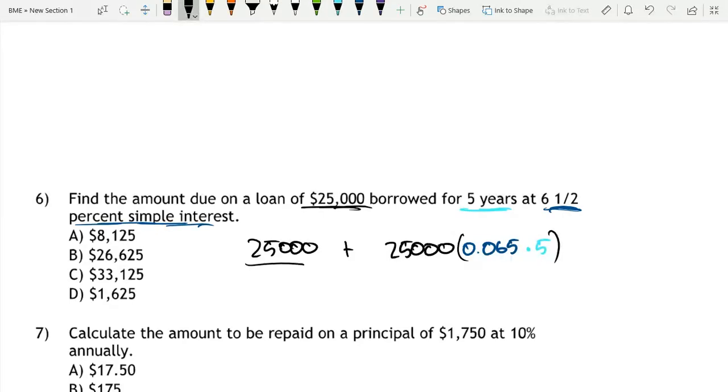But we also have to pay our principal because we have to pay back this as well. So now if I do that, 25,000 times 0.065 times 5 equal to 8,125 plus 25,000. Now, this is equal to 33,125.